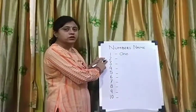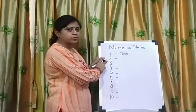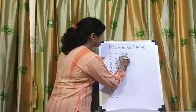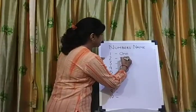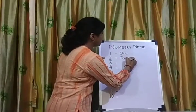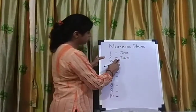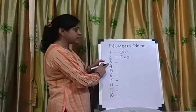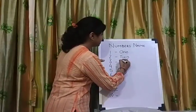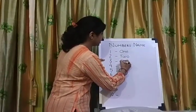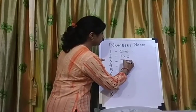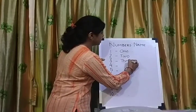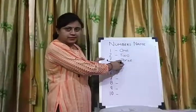This is two. The spelling of two is T-W-O. Two. This is three. The spelling of three is T-H-R-E-E. Three.